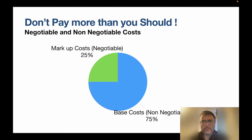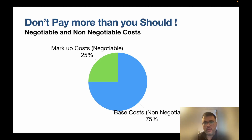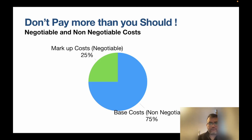Looking at the pie chart, there are two different kinds of costs: markup costs and base costs. Markup costs are the negotiable costs, and base costs are the non-negotiable costs. Markup costs constitute roughly around 25% of the total payment fee, versus base costs which constitute the larger share at about 75%.